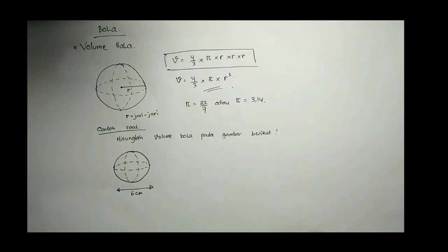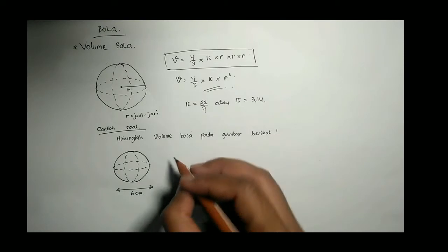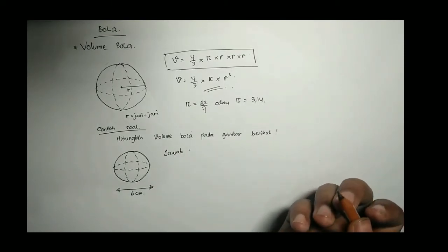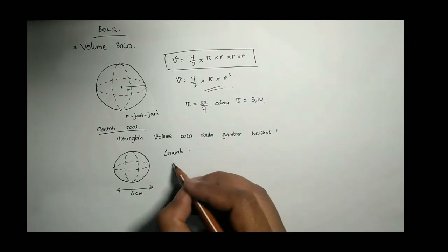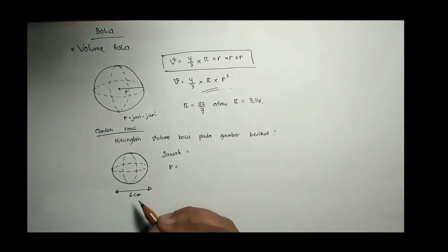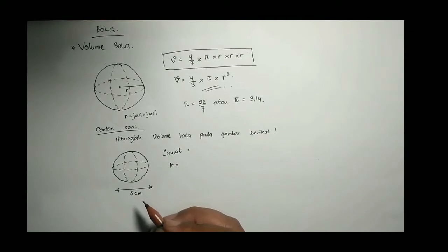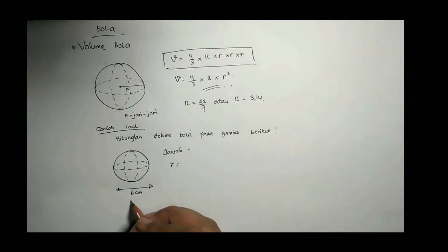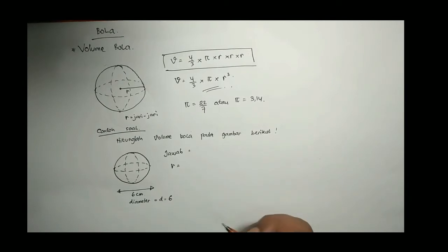6 cm misalkan. Nah jawab, 6 cm ini kalian harus bisa membedakan ini diameter apa jari-jari. Padahal yang dibutuhkan untuk mencari volume adalah jari-jari ya. Nah disini di gambar itu panjang dari tepi-tepi ini namanya diameter bukan jari-jari.